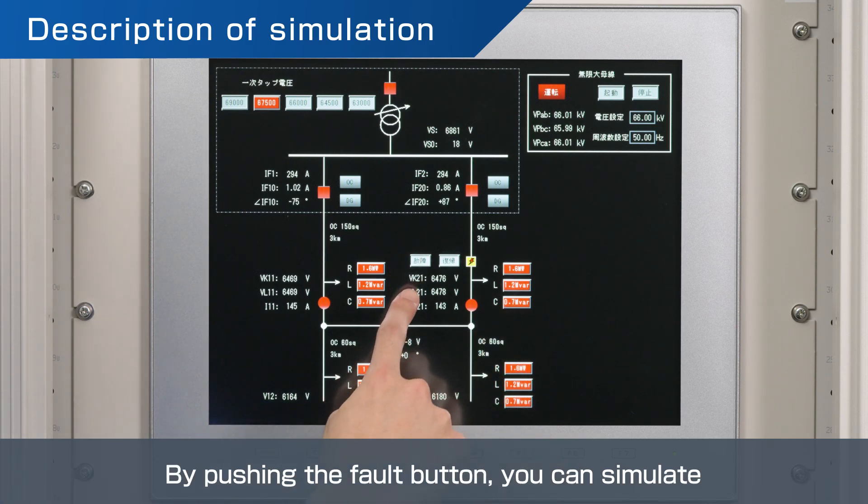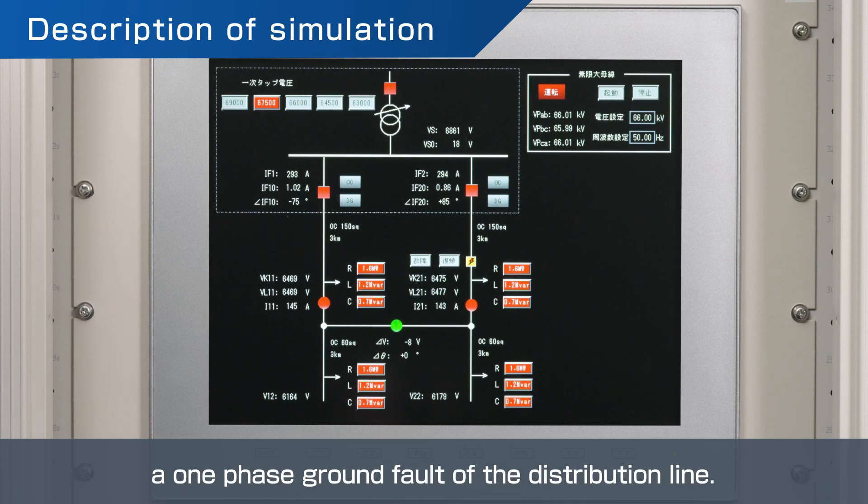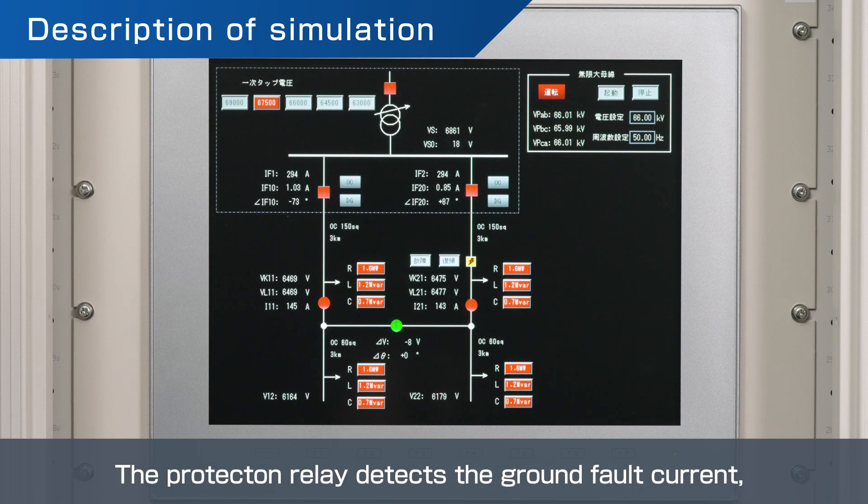By pushing the fault button, you can simulate a one-phase ground fault on the distribution line. The protection relay detects the ground fault current and the feeder circuit breaker opens.